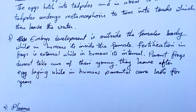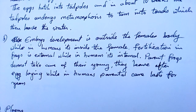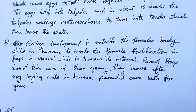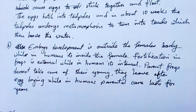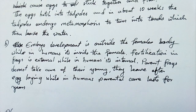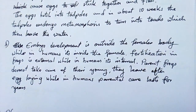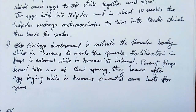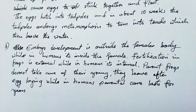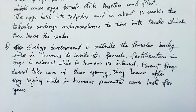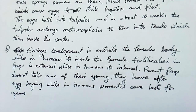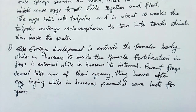Parent frogs do not take care of their young — they leave after egg-laying — while human parental care lasts for years, sometimes even a lifetime. Humans are complicated. Those are some of the points on that question.